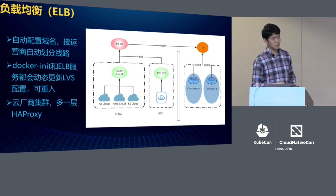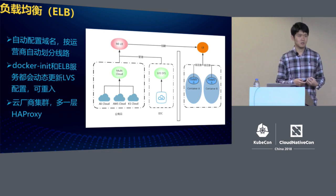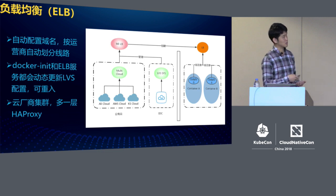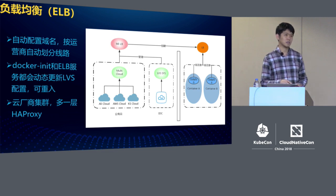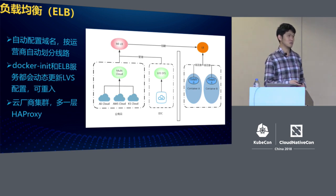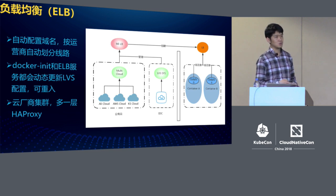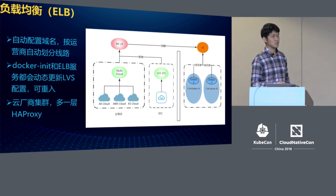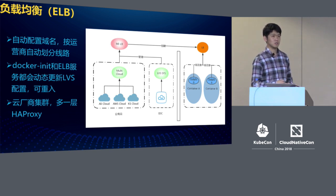For cloud vendor clusters, the network is quite restricted. If we need ELB services for a cloud vendor cluster that connects to our network, we add one more layer of proxy for our traffic. This added layer means more maintenance work and more chances of encountering problems. So we need a deeper connection with cloud vendors, with the LB from cloud vendors connecting to our router.